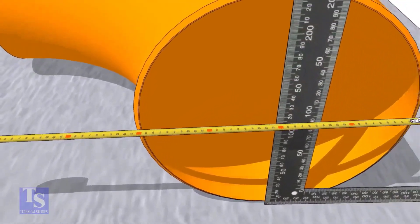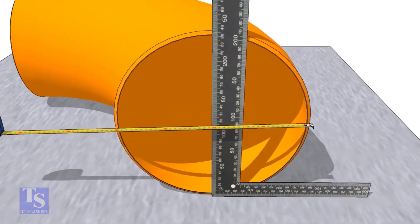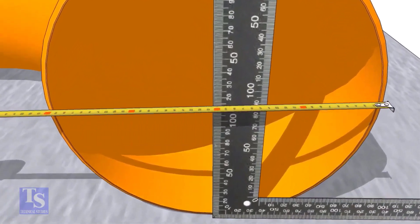Put a right angle at the center of the elbow. Make sure the distance from the edge of the elbow to the face of the right angle is equal.